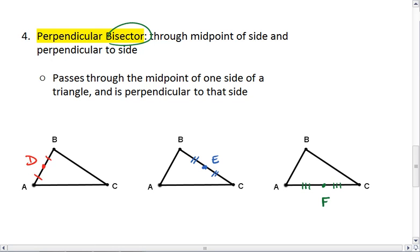And now because it's a perpendicular bisector, this line is going to go through the midpoint and form a right angle.